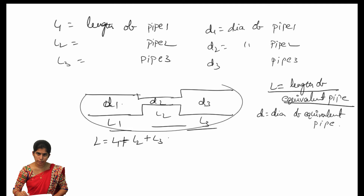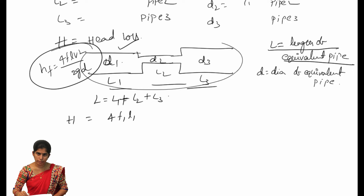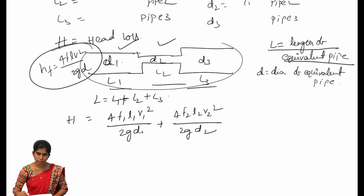The total head loss H equals the sum of head losses in each pipe. Using the formula HF = 4FLV²/2GD, for the first pipe it becomes 4F1·L1·V1²/2G·D1, for the second pipe 4F2·L2·V2²/2G·D2, and for the third pipe 4F3·L3·V3²/2G·D3.